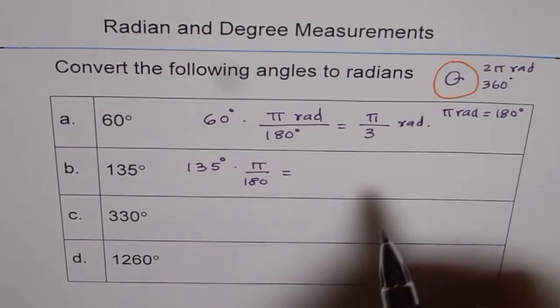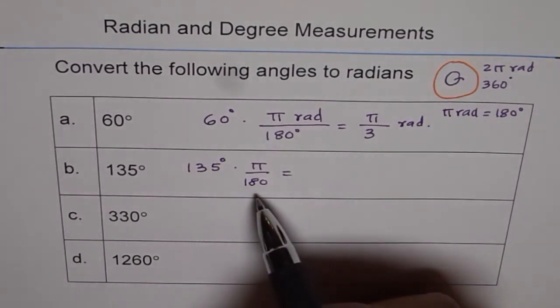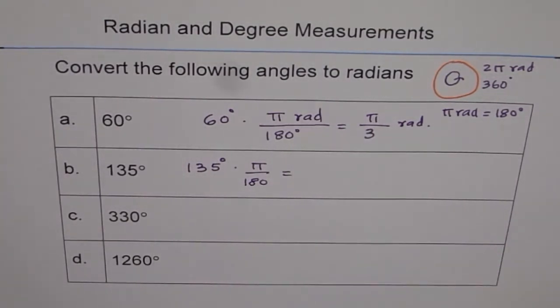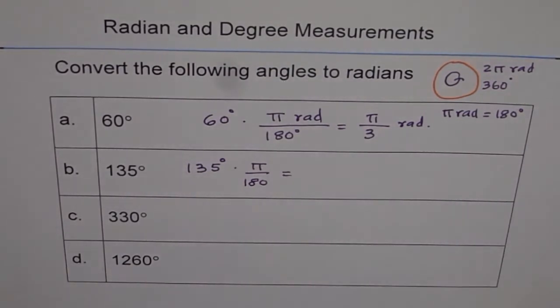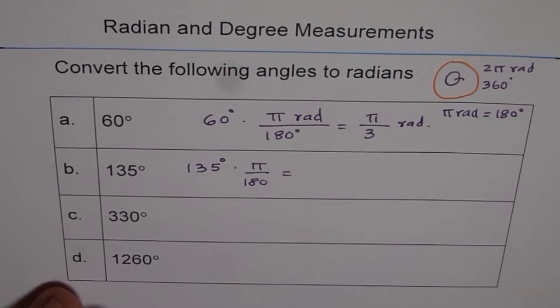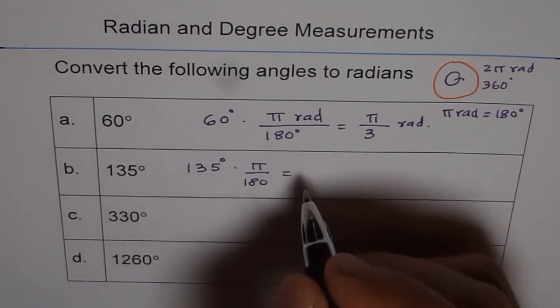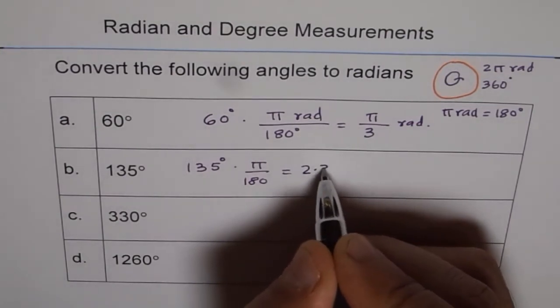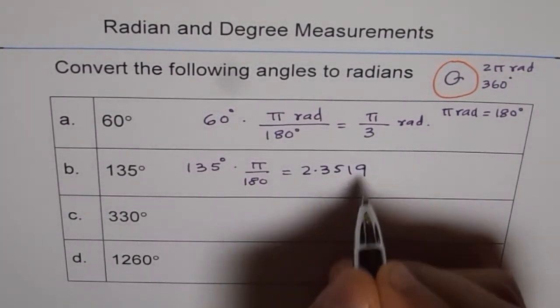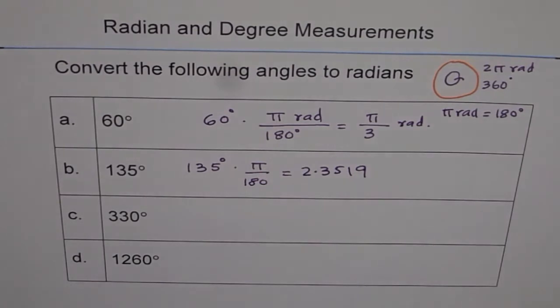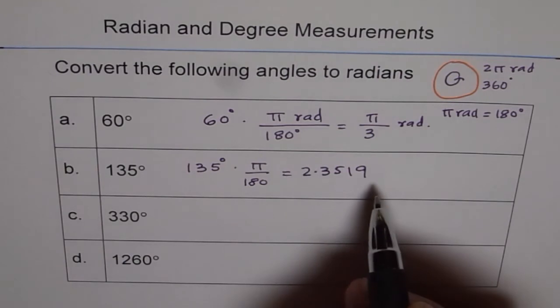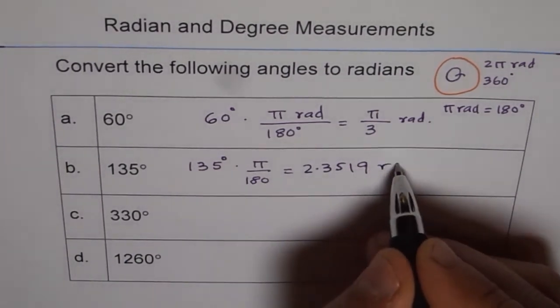So 135 degrees, I will suggest write π over 180. And if nothing is mentioned here, you have an option. You can write as an exact answer or using a calculator. So you can calculate this and say 135 times π divided by 180 equals to 2.35619. So you can write like this. So depending on what the question is saying, we can always convert it to decimal places also. Radians.